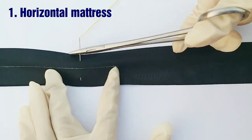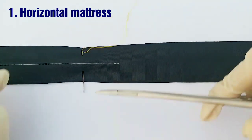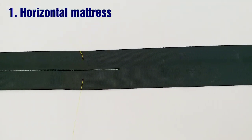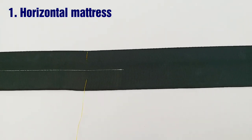Suppose this white line is the incision or the cut, and this black ribbon is the skin and the subcutaneous tissues under it. For horizontal mattress, you have to take the needle from one side of the incision to the other.